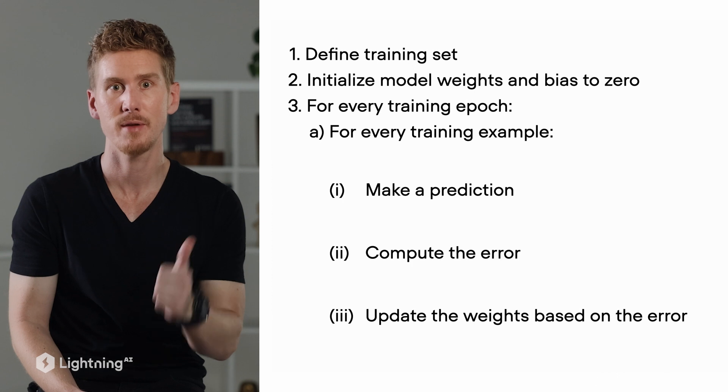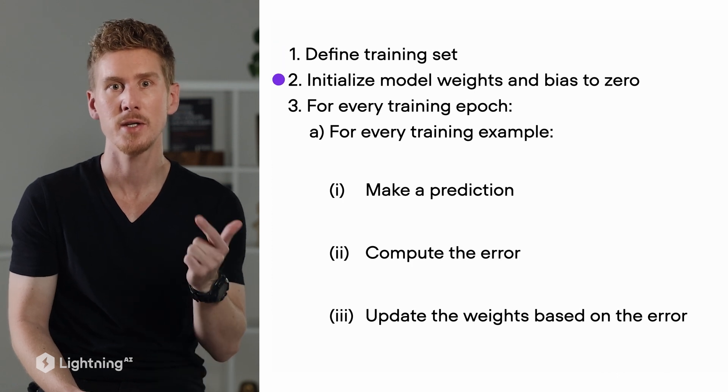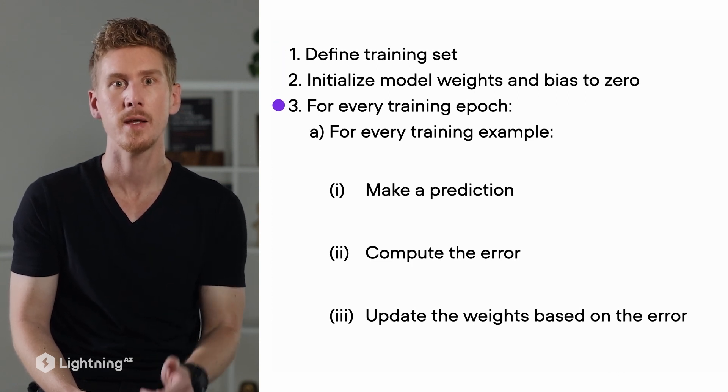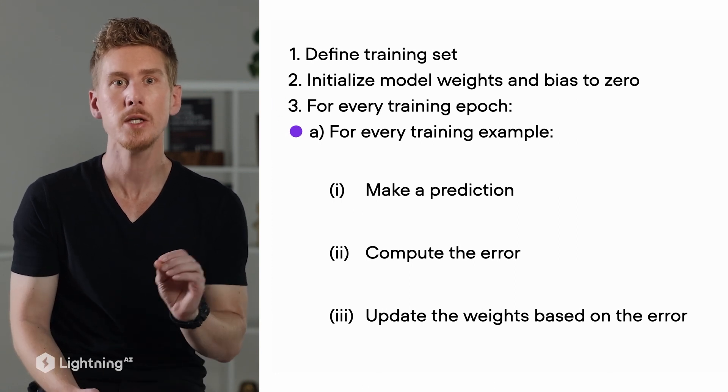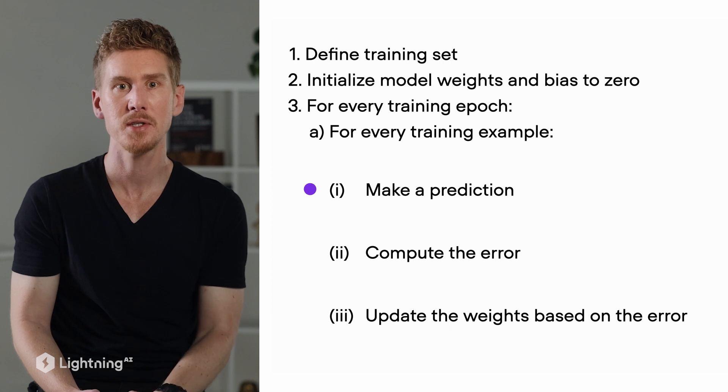In perceptron training, we first define the training dataset, we initialize the model weights and the bias unit to zero, and then we iterate over the training set using these training epochs. In each training epoch we make predictions, compute the error, and update the weights and the bias unit.